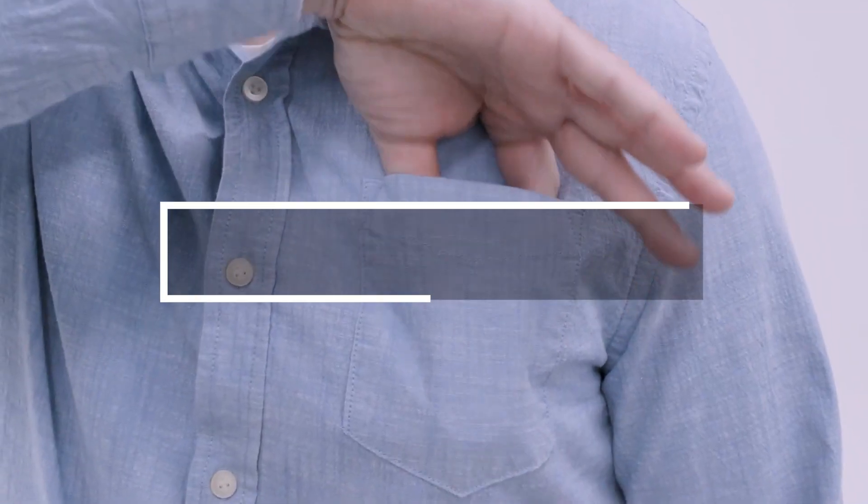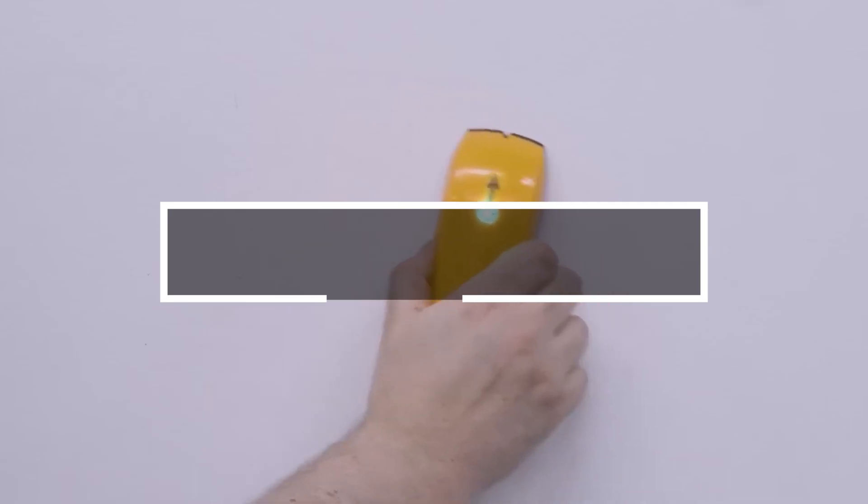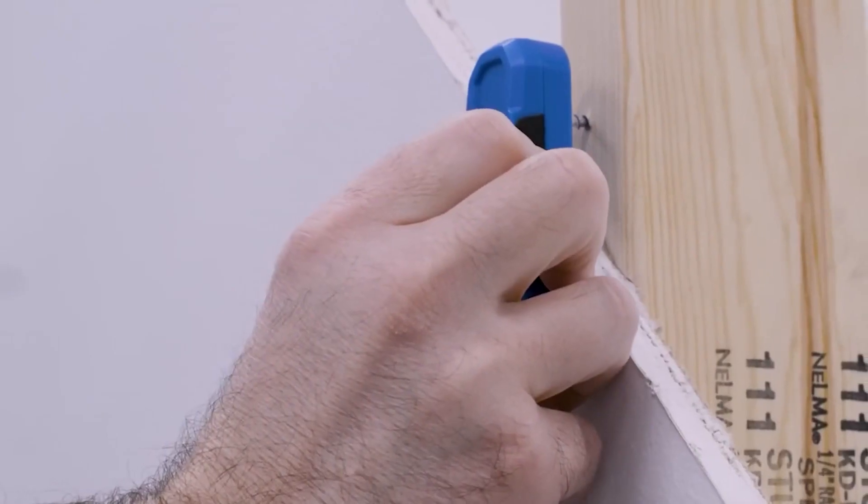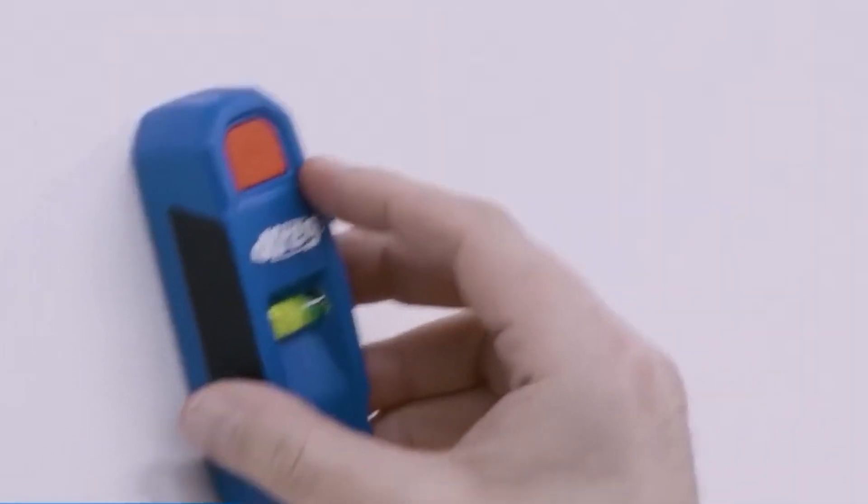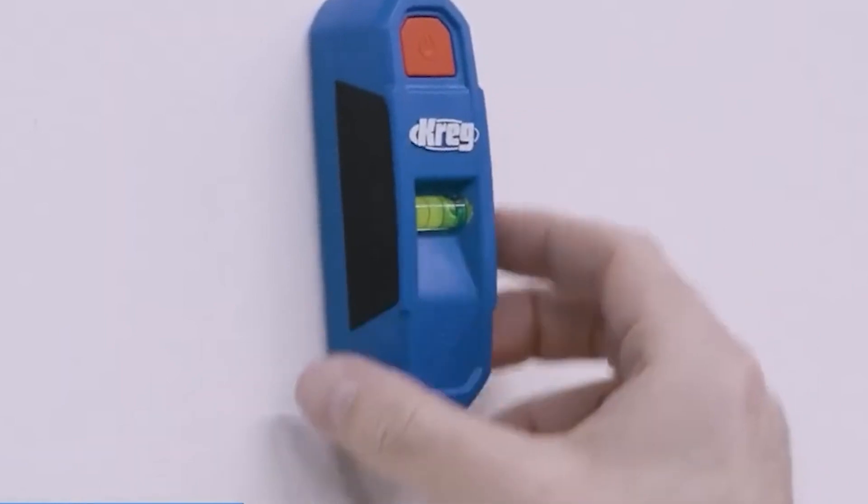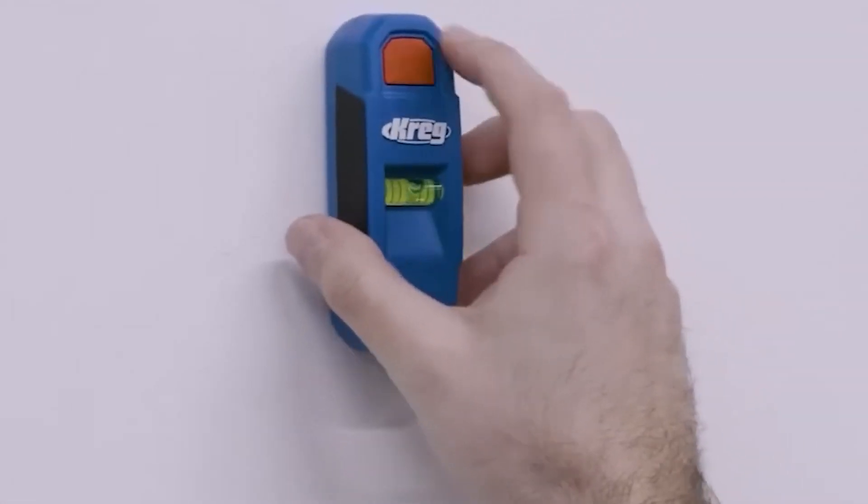Stud finder. The following is a simple yet incredibly useful tool for locating studs, screws, and nails in drywall. The tool utilizes two rare earth magnets and proves invaluable for installing cabinets and shelves, enabling you to position fasteners with utmost precision.